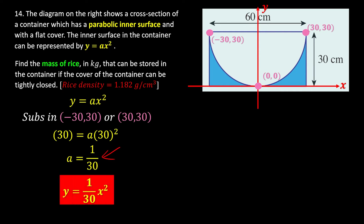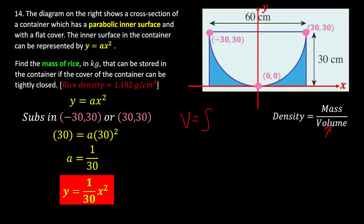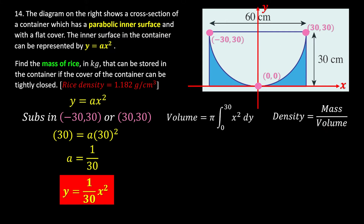Our complete equation is y = (1/30)x². Since a is positive, we have a smiley-face curve, which makes sense. To find the volume, we imagine the curve spinning about the y-axis to form the container shape — like a tupperware container. Spinning about the y-axis means the radius equals the x value, giving area = πx².